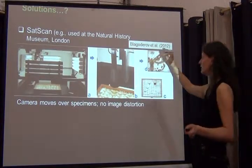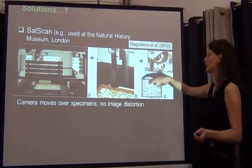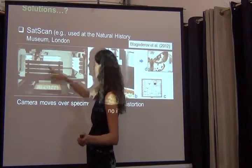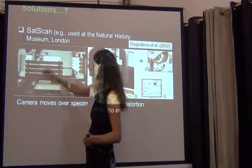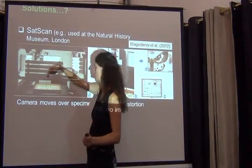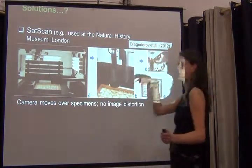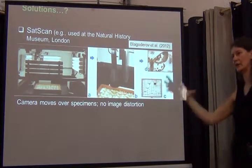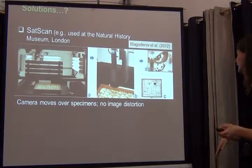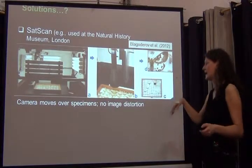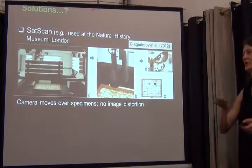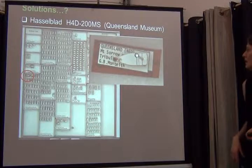The solution to distortion is to use more upscale and dedicated imaging systems. For example, the Natural History Museum in London has started using what's called set scan — a fairly complicated box with lights around it and a camera that moves over and across the drawer, taking multiple images. There's no tilting of the camera around the insect drawer — it's a very flat, controlled system. When those images are stitched together, you won't see any of the distortion seen with the original GigaPan images.